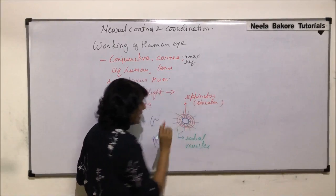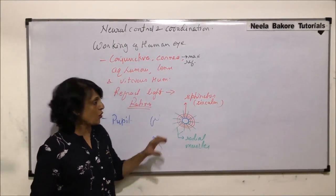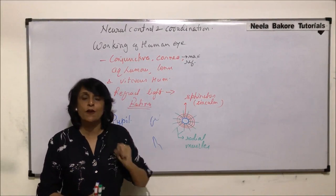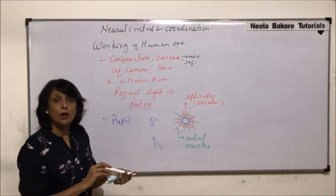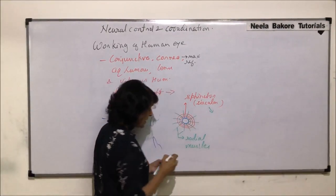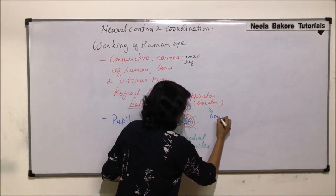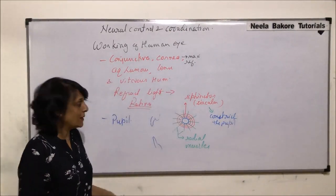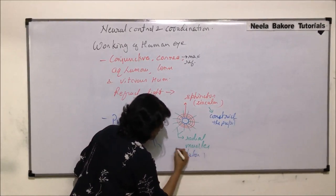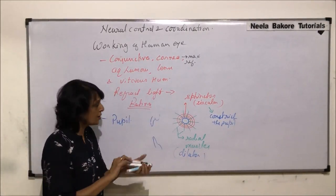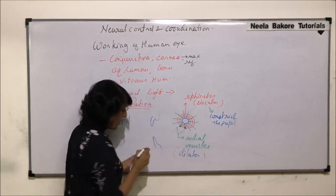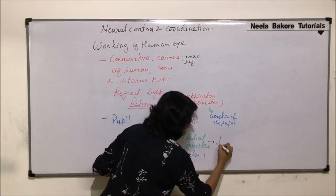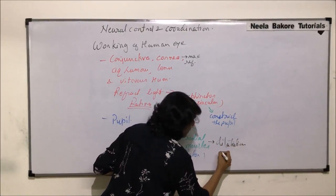When the circular muscles or sphincter muscles contract, the entire opening becomes narrower — we call this constriction of the pupil. So contraction of sphincter muscles results in constriction of the pupil. The radial muscles, which are the dilator muscles, when they contract, this opening gets wider, so their contraction results in dilatation of the pupil.